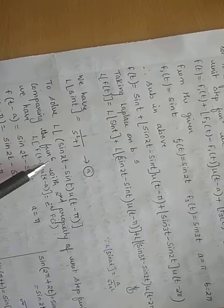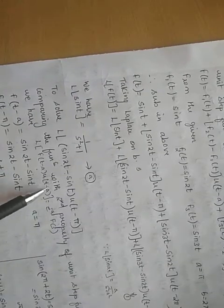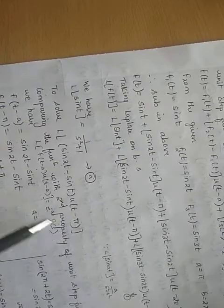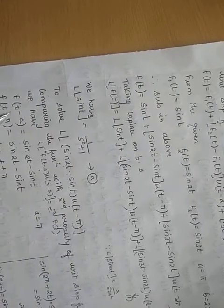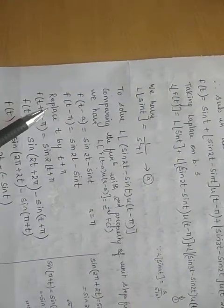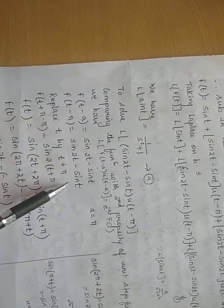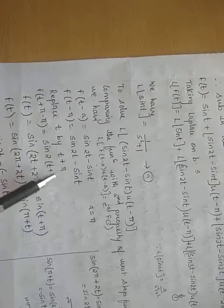Comparing, we identify f(t−a) = sin(2t) − sin(t) with a = π. Substituting a = π, we get f(t−π) = sin(2t) − sin(t).